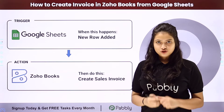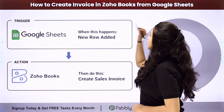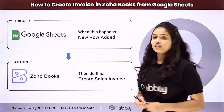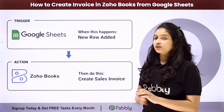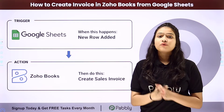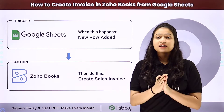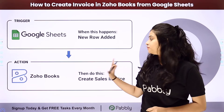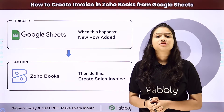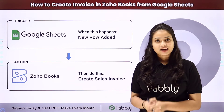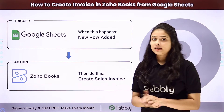Hello everyone. In this video we are going to learn how to create an invoice in Zoho Books from Google Sheets. I want that whenever a new row is added in my Google Sheets along with the details, automatically by using the same details, a sales invoice should be created in my Zoho Books. So how we are going to do this process automatically and effortlessly? For that we will have to integrate both these applications.